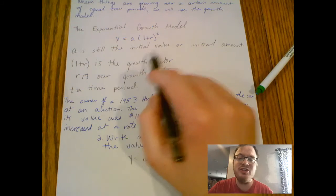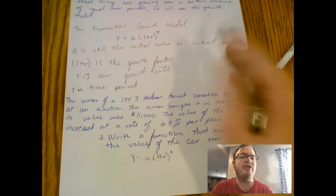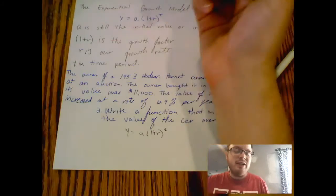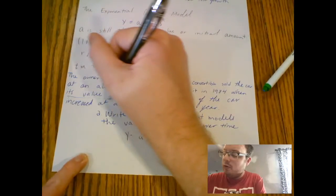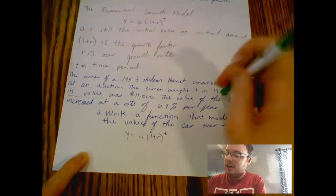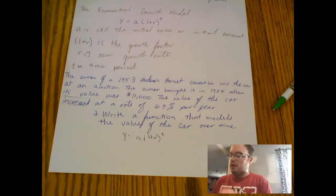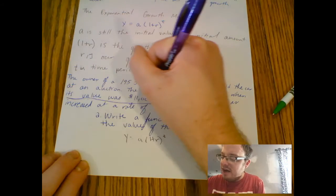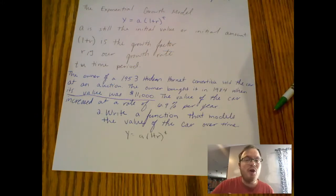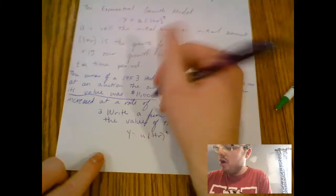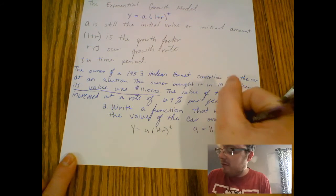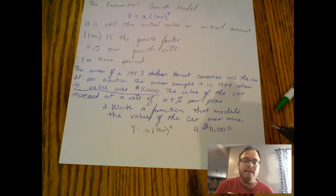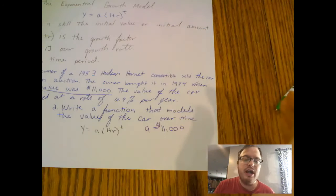If I do this and say y equals a times one plus r to the t, the question becomes: what is our initial value? Because a is the initial value or the initial amount. What was the initial amount that car cost? If we look back here and annotate this word problem, we can see its value was $11,000 in 1984 when we bought the car initially. So A in this equation is now going to be $11,000.